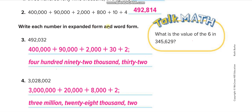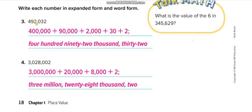Now write each number in expanded form and word form. First: 492,032 — four hundred thousand plus ninety thousand plus two thousand, no hundreds, plus thirty plus two. Word form: four hundred ninety-two thousand, thirty-two. Second: 3,028,002 — three million plus twenty thousand plus eight thousand plus two. Word form: three million, twenty-eight thousand, two.